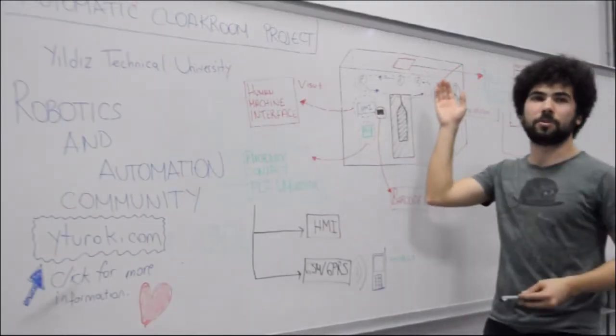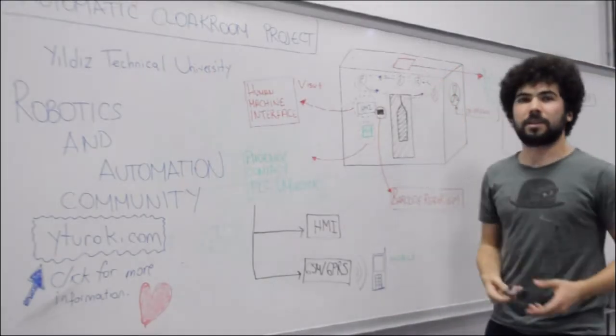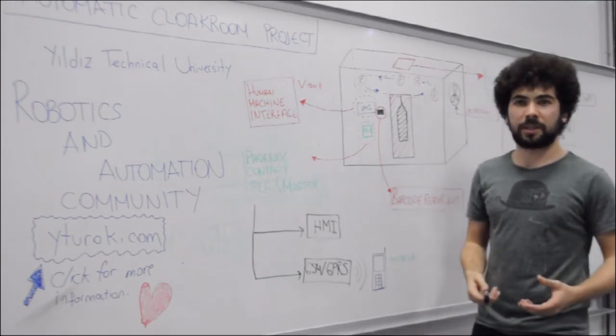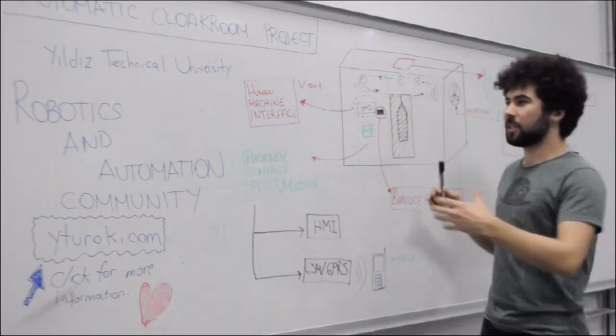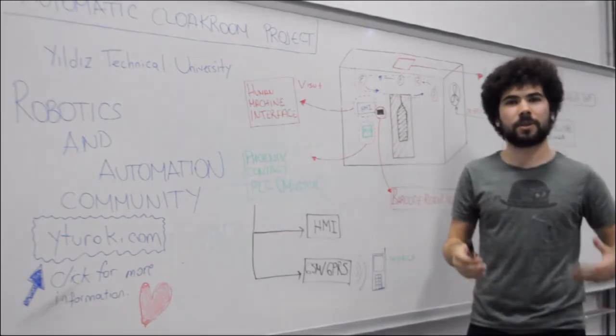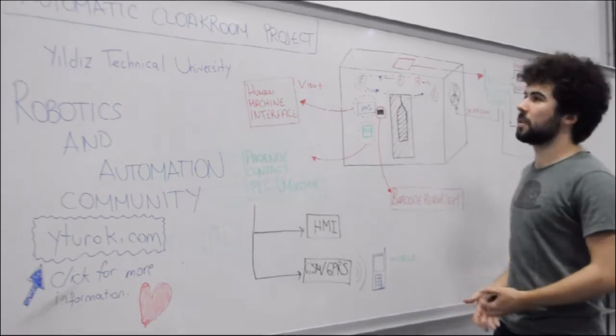The second PLC we use as slave communicates with the master itself and the system in the home and finds the clothes, jackets, or whatever you hang more accurately.